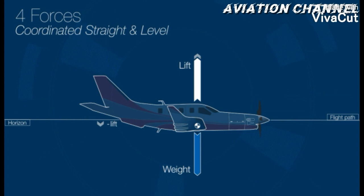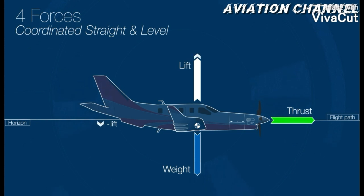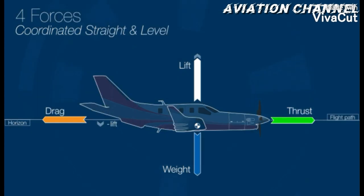This air pressure difference is because of the shape of the wing — that shape is the aerofoil shape. Now, the third force is thrust. Thrust is a mechanical force generated by the engine to propel the aircraft in the forward direction. As we know that aircraft moves in air and air is a fluid, so it will definitely resist the motion of the aircraft, and this resistance force is known as drag.